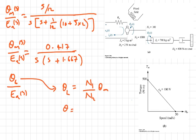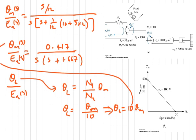Or from here we can see that θ_L equals θ_M over 10, so we substitute this here, and we have our final desired answer which is θ_L over E_A(s), all in the s-domain, will be equals to 0.0417 over S times (S plus 1.667). And this is the answer.